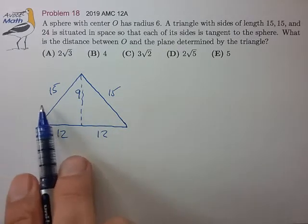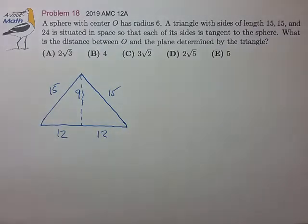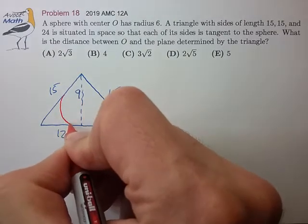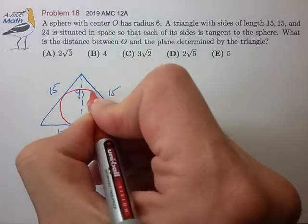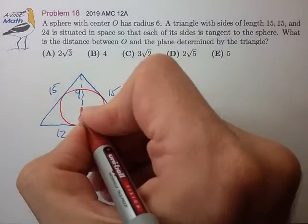So if we slice that sphere along the plane of the triangle, that's going to give us a circle that just touches the sides of this triangle. So in effect, that's going to be an inscribed circle, the in-circle.